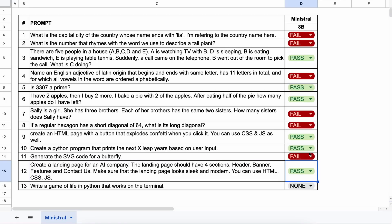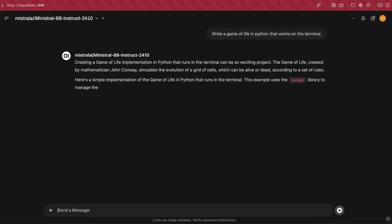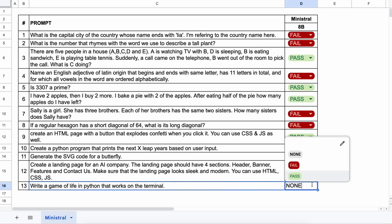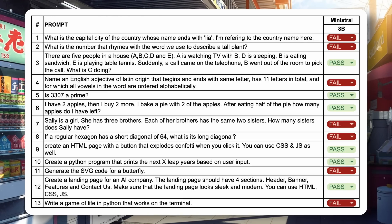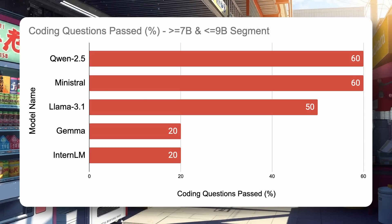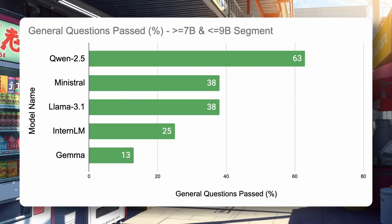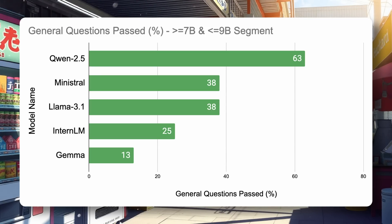Now the last question is: write a Game of Life in Python that works in the terminal. Here's the code — if we run it, you can see that it doesn't work and throws an error, so this is a fail. Here's the final chart. As you can see, it performed really well considering its size — it's definitely a bit better than LLaMA 3.1, at least in coding. For instance, creating a button that explodes confetti is an issue for most smaller models, but this one handled it well. From what I can see, it has some chain-of-thought training; in the mathematics questions it goes through step-by-step reasoning, which makes it quite superior to LLaMA 3.1.